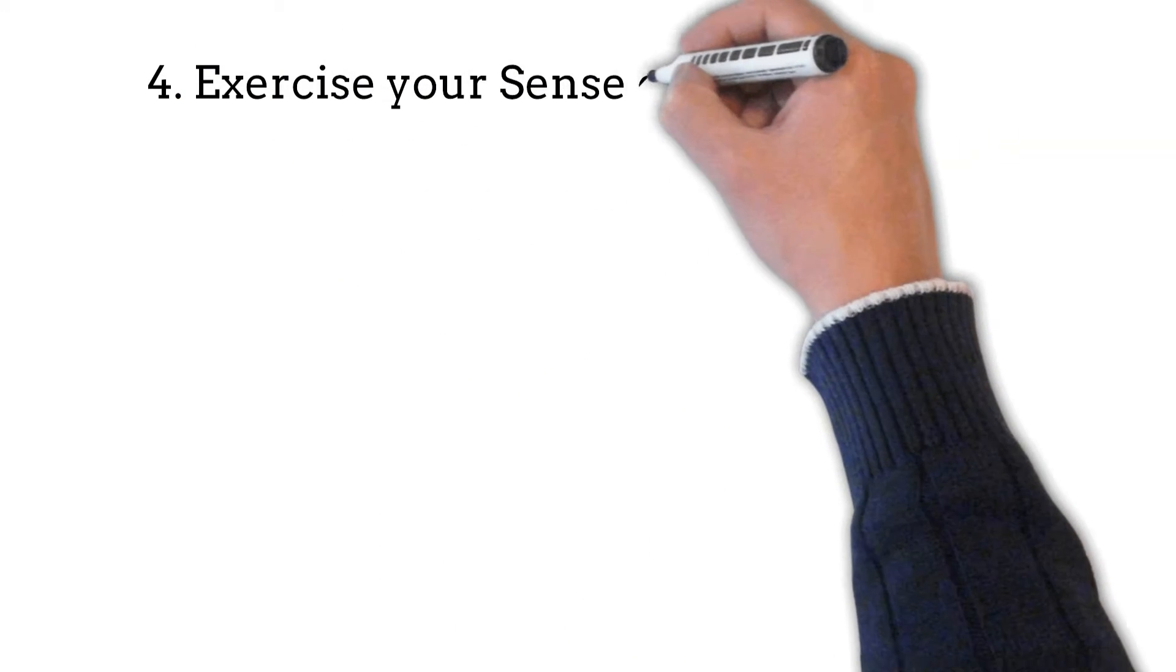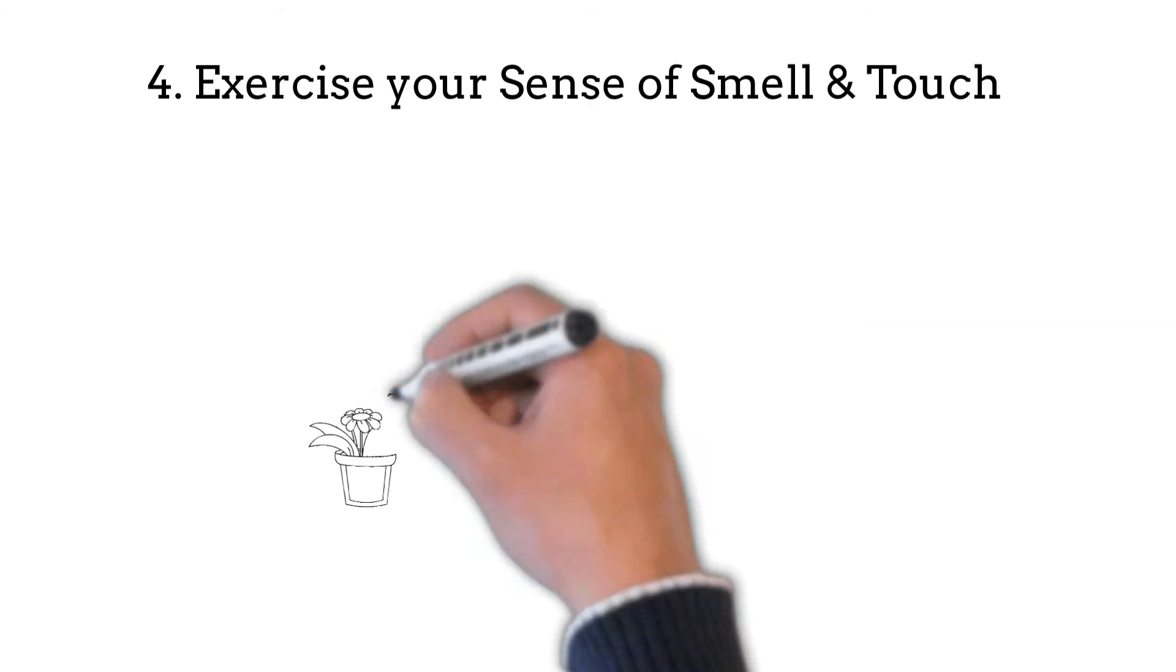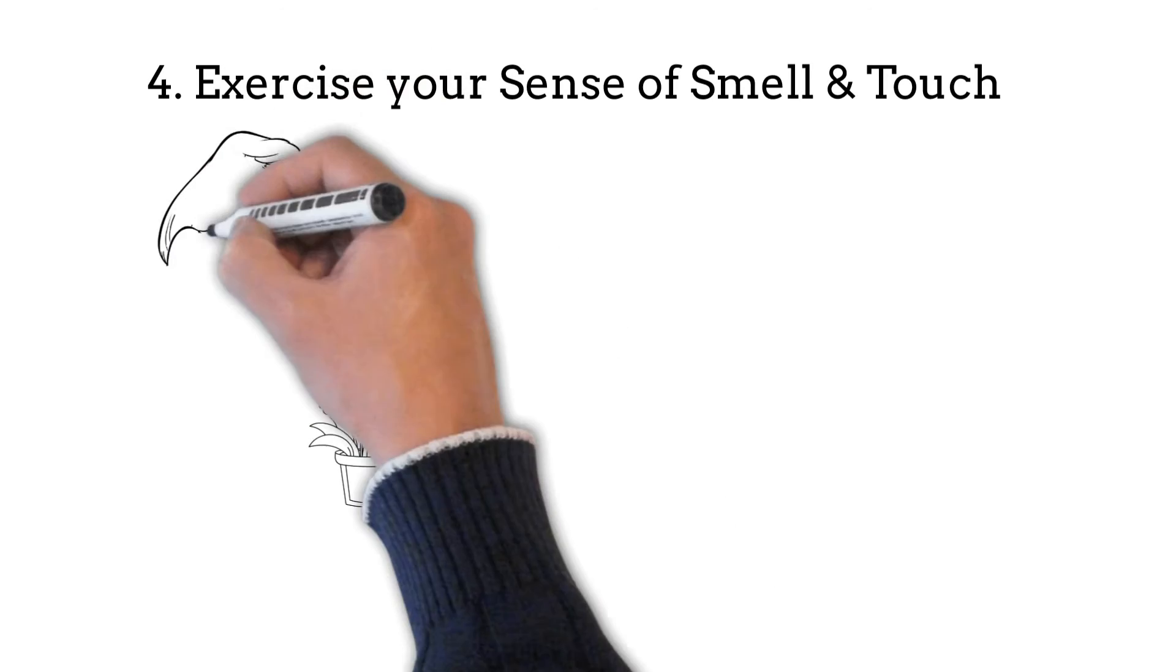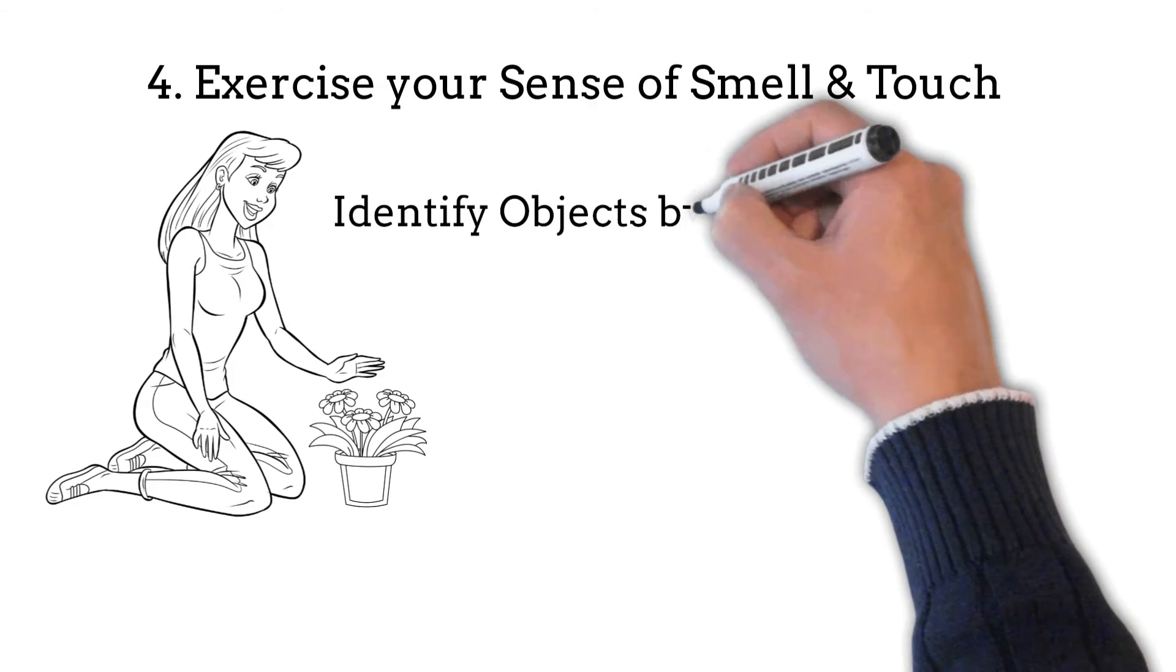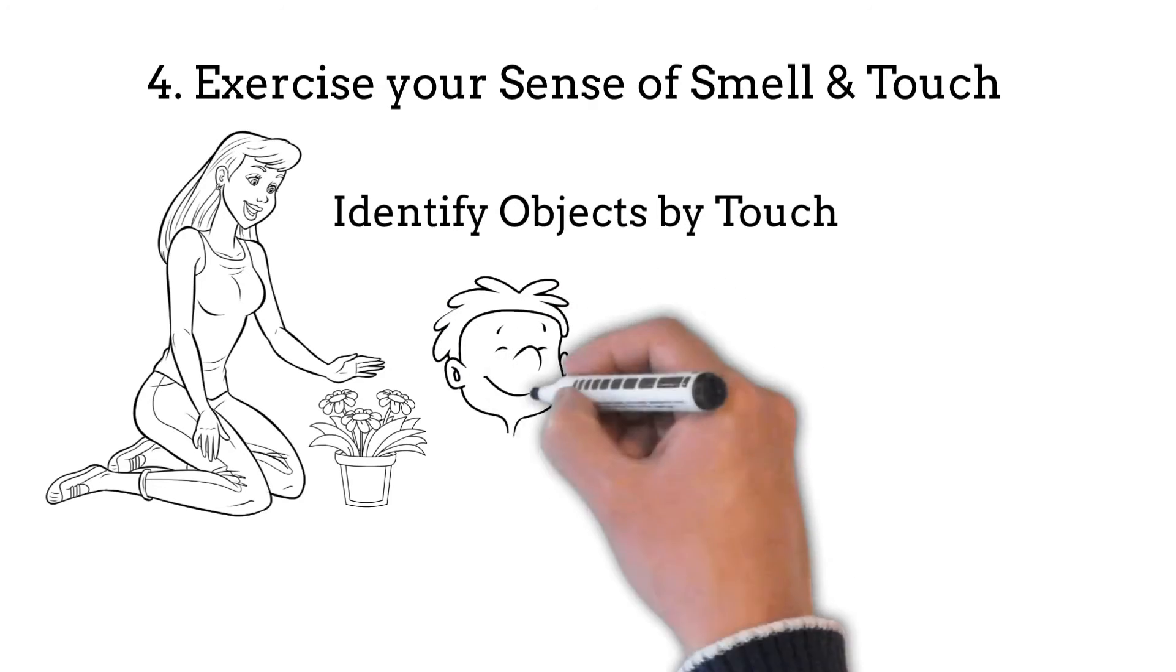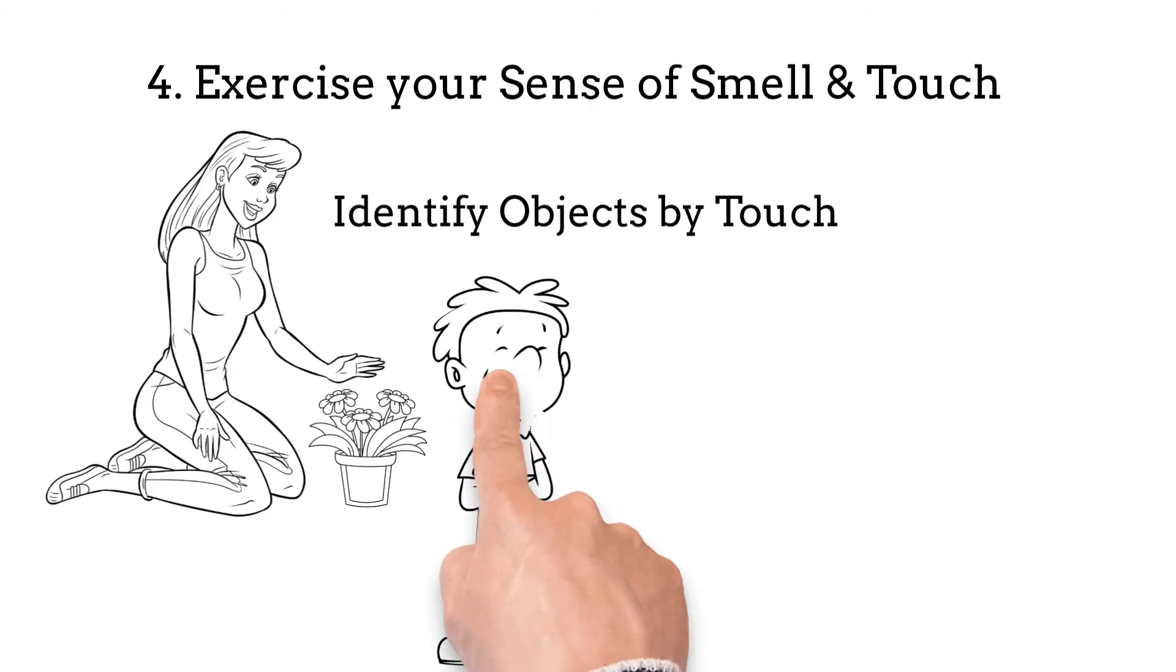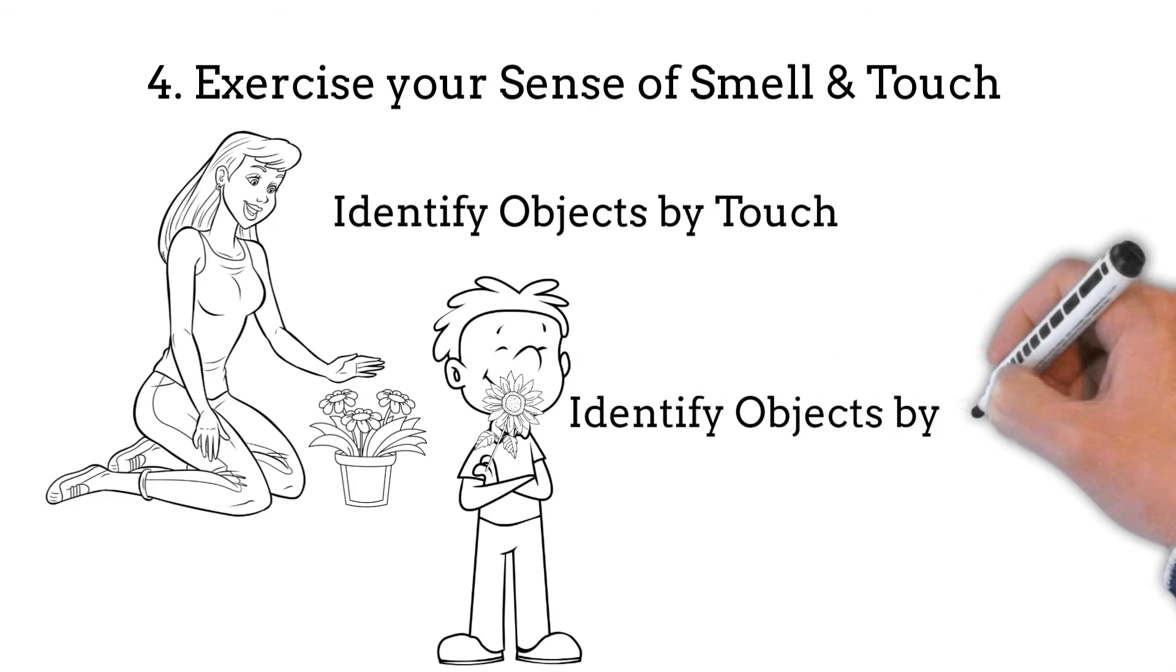4. Exercise your sense of smell and touch. Touch and smell different things in nature. You can simply walk in a garden and exercise your sense of smell and touch by smelling and touching different plants, leaves, and flowers. Once you have touched and smelled the leaves and flowers, you can now close your eyes and try to identify the flowers by touch or simply by smell.